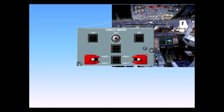On the overhead panel, there is a cargo smoke panel with the indications on cargo smoke. The system consists of the discharge nozzles and two fire bottles. The system is controlled through this panel.